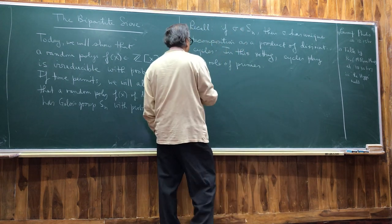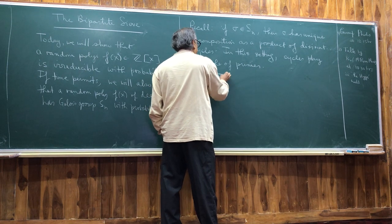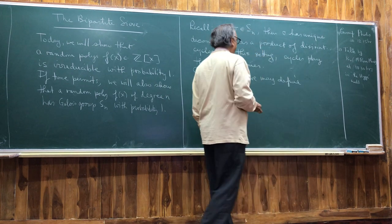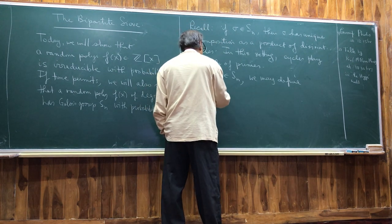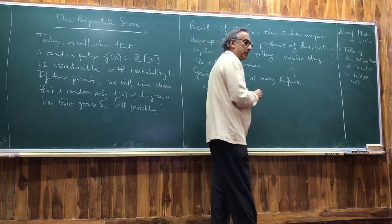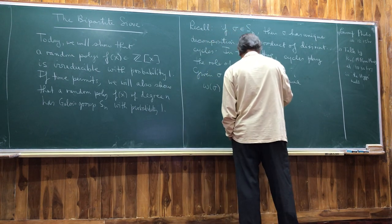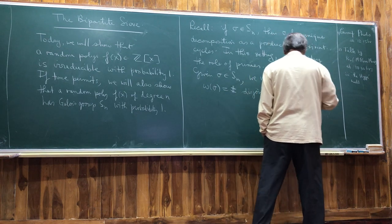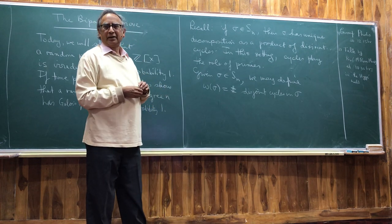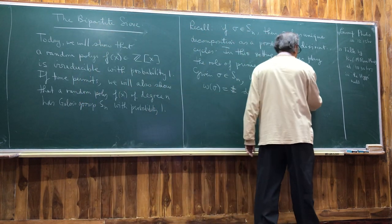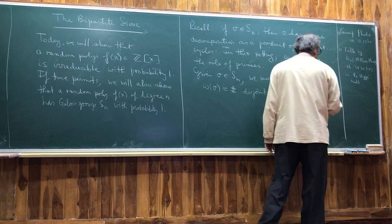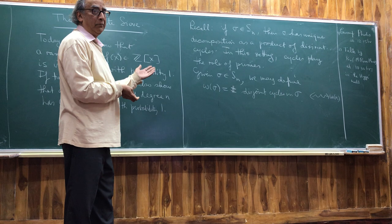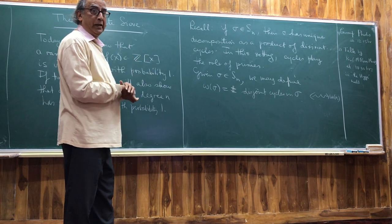We may define omega(sigma) to be the number of disjoint cycles in the unique decomposition. I'm using the notation omega(sigma) deliberately — this is analogous to omega(N). And so we may begin to ask, once we have the metaphor, whether the Erich-Katz theorem goes through. This is exactly what Goncharov was doing.